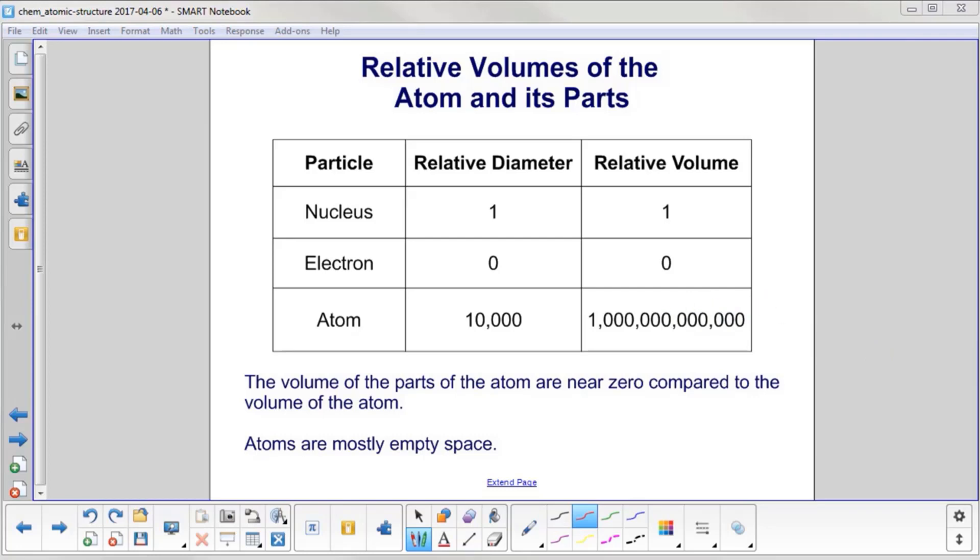So the volume of the parts of the atom - the nucleus has a relative volume of 1, the electron almost zero - they're minuscule compared to the volume of the atom, which comes up with this: Atoms are mostly empty space.